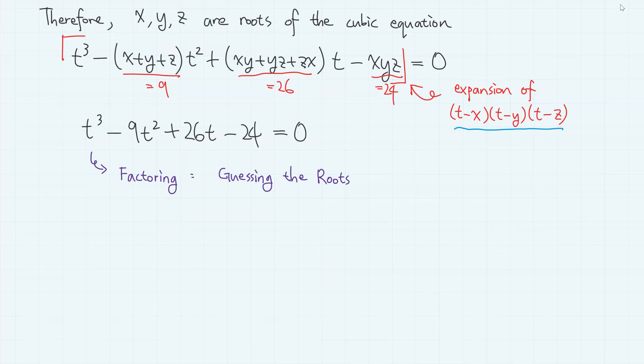Here, let us try to factor the left-hand side by the method of guessing the roots. The roots must be the divisors of the constant term 24. And with a little bit of trial and error, you can find that t equals 2 is one of the roots.